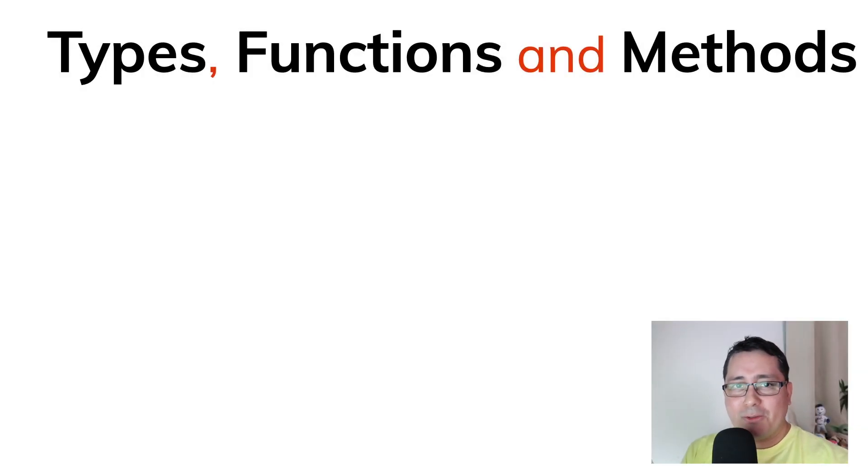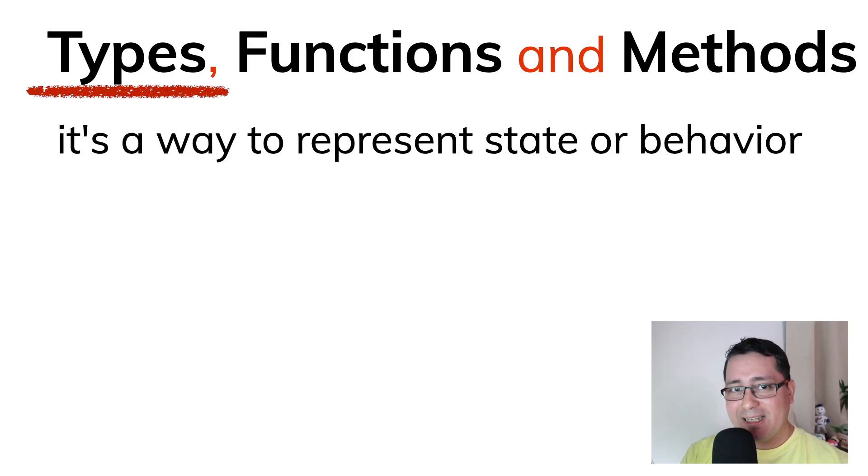But before talking about interface types, we need to define what is a type. And in Go, a type is a way to represent state or behavior.